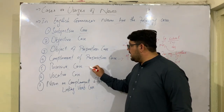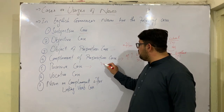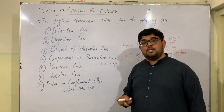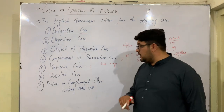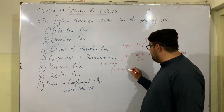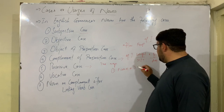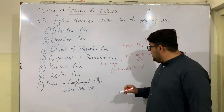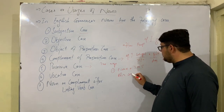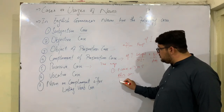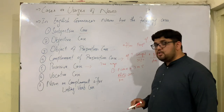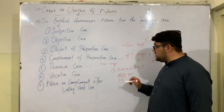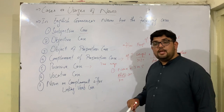The fifth case of noun is the possessive case. In this case, a noun can be used in two ways to show possession or ownership. The first way is to use noun plus apostrophe-s (or s-apostrophe) to make possessive nouns, also called the genitive case. For example: 'Ali's car' means the car belongs to Ali. This noun is possessive because it contains apostrophe-s, which shows ownership.